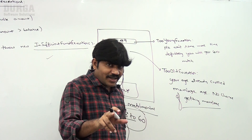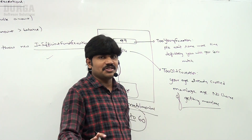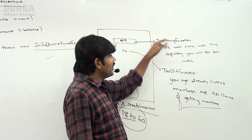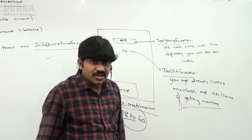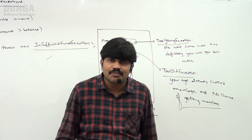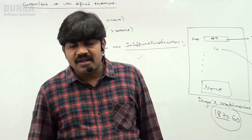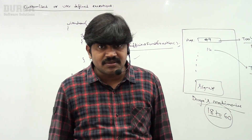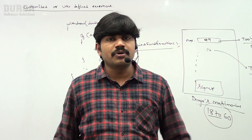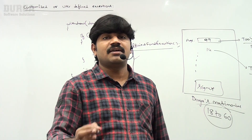For 99 years I want to provide a TooOldException, and for 14 years I want to provide a TooYoungException with a reverse message — just for fun. Now observe carefully: what is TooYoungException or TooOldException? These exceptions are not available in Java. Based on my programming requirement I have to define these exceptions. Such type of exceptions are by default considered as customized exceptions or user-defined exceptions.